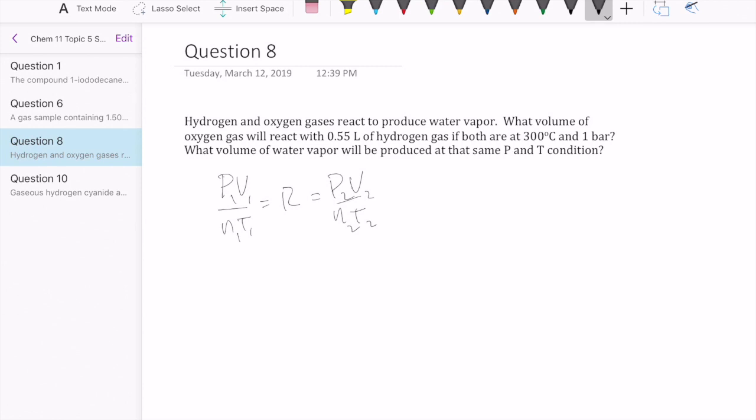The gases are all going to stay at 300 Celsius and one bar. So that means the temperature and pressure are going to stay the same throughout the reaction. That means you can cancel out the pressure and temperature because P1 is equal to P2 and T1 is equal to T2. Then your equation simplifies to V1 over N1 equals V2 over N2, which is Avogadro's law.